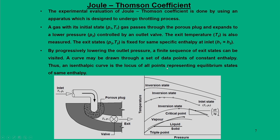In the pressure-temperature graph, starting with initial state (T₁, P₁) at point 1, for different exit pressures P₂ we get corresponding temperatures T₂, T₃, and so on. We can generate these data points on a P-T curve for one particular inlet state. By changing the inlet state, different sets of curves can be formed for inlet states A, B, C, D, E, and so on.